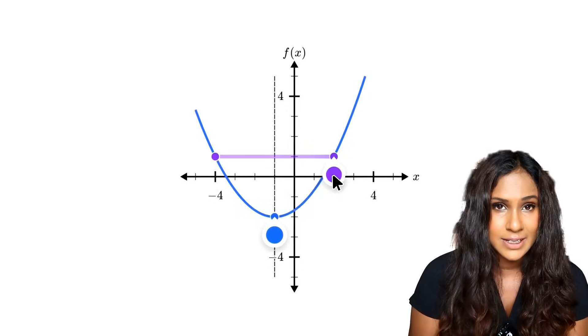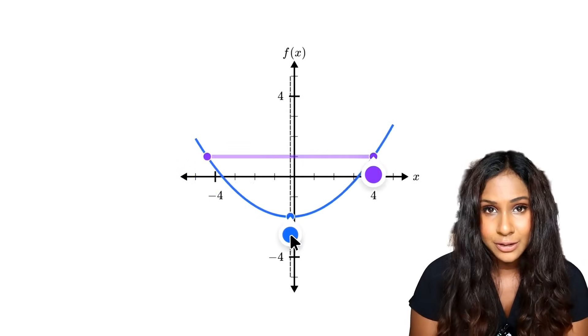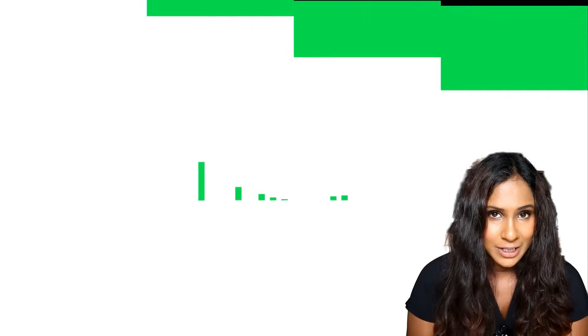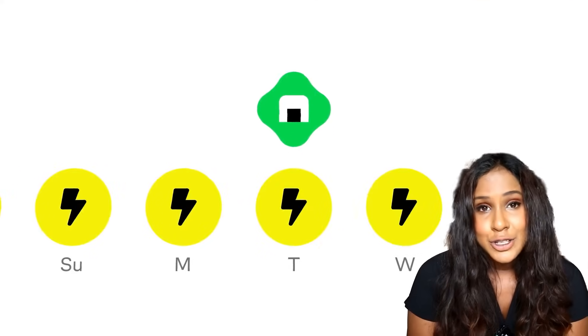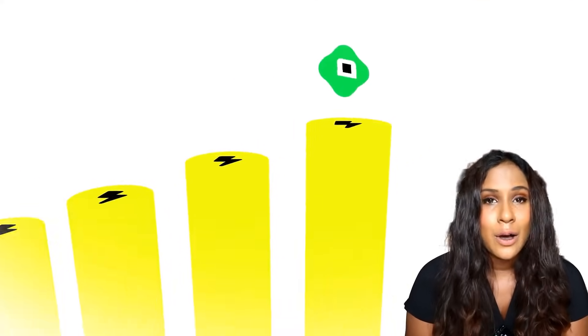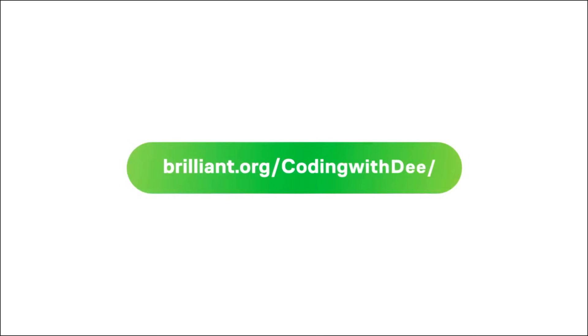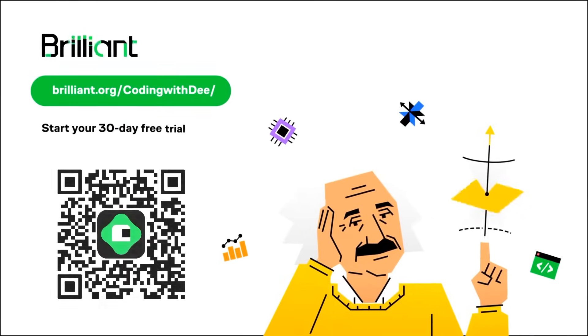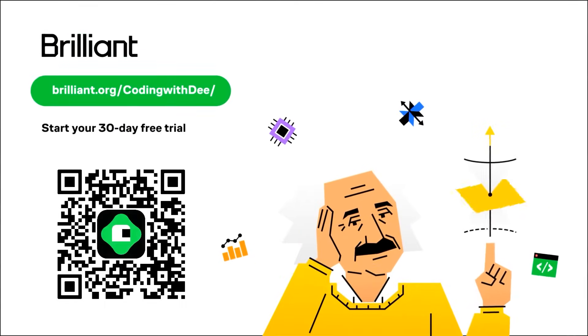So, if you ever wanted to explore topics like data science, programming, or math, yeah, math is a good one, try Brilliant. It's great. Like I said, I use it myself and you do develop a powerful daily learning habit. To try everything Brilliant has to offer for free for a full 30 days, visit brilliant.org slash codingwithd. Or you can even click the link in the description. You'll also get 20% off the annual premium subscription.